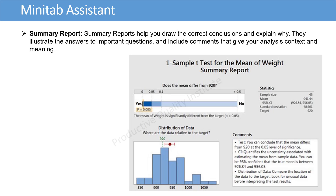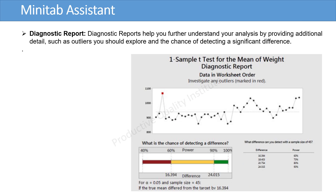Summary reports help you draw the correct conclusions and explain why. They illustrate the answers to important questions and include comments that give your analysis context and meaning. Diagnostic reports help you further understand your analysis by providing additional detail, such as outliers you should explore and the chance of detecting a significant difference.